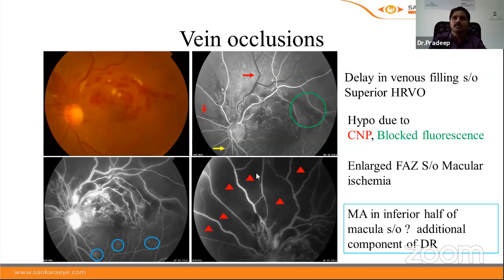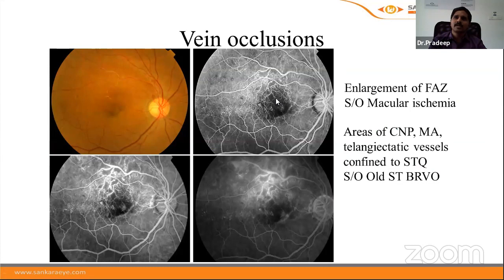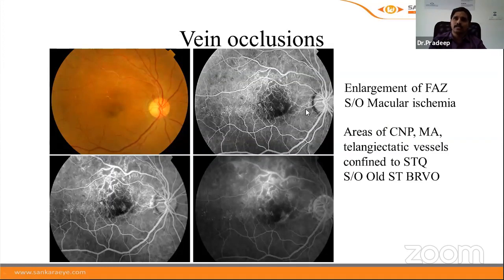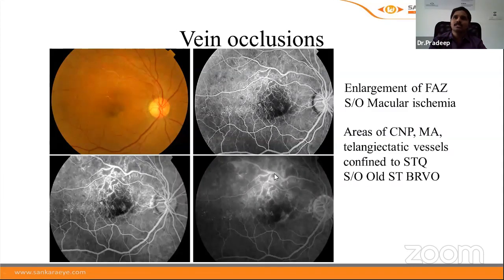In an old superotemporal branch retinal vein occlusion with macular ischemia, all features — including capillary non-perfusion, microaneurysms, and telangiectatic communicating vessels — are confined to the superotemporal quadrant. An old vein occlusion typically shows microaneurysms, telangiectatic communicating vessels, capillary non-perfusion areas, and may also show staining of vessel walls.